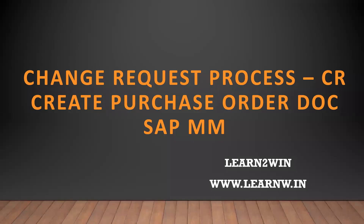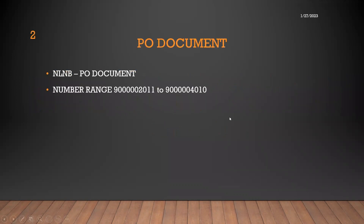Hello everybody. Today I have got a change request for creation of a purchase order document — they call it a CR document, or change request process. What I'm going to do is create a purchase order document NLNB, with a specific number range they have asked for.